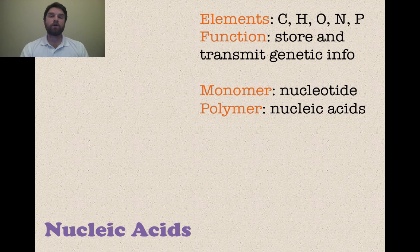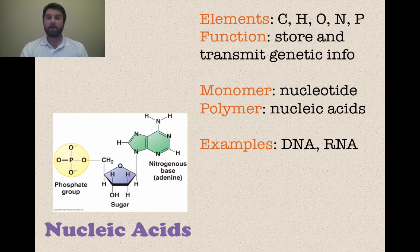So next we're going to talk about nucleic acids. These have carbon, hydrogen, oxygen, and nitrogen. And then we add phosphorus in there. Their function is to store and transmit genetic information. So the nucleic acids are mostly found within the nucleus of the eukaryotic type cells or just floating around in prokaryotes. The monomer is called a nucleotide. And a polymer is a nucleic acid. Easy to remember there. So examples are DNA and RNA.